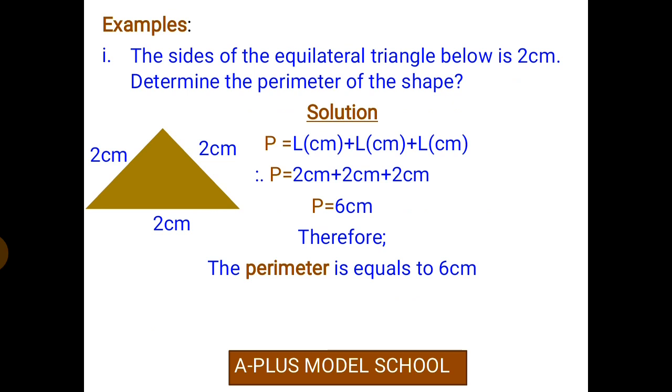So therefore, to get the perimeter, we add all the sides together because perimeter is the sum of all sides. Therefore, P, which represents perimeter in this example, is equal to L(cm) plus L(cm) plus L(cm), which equals 2 cm plus 2 cm plus 2 cm. Therefore, P is equal to 6 cm. The perimeter of this equilateral triangle is 6 cm.